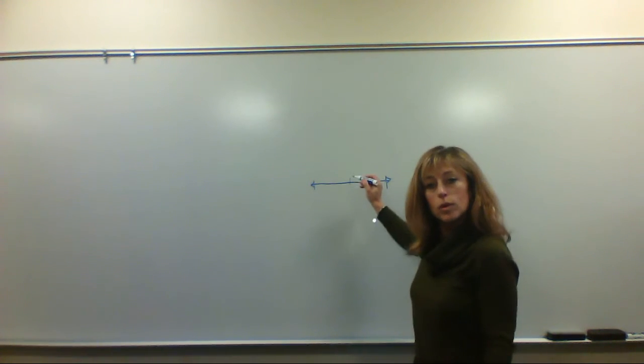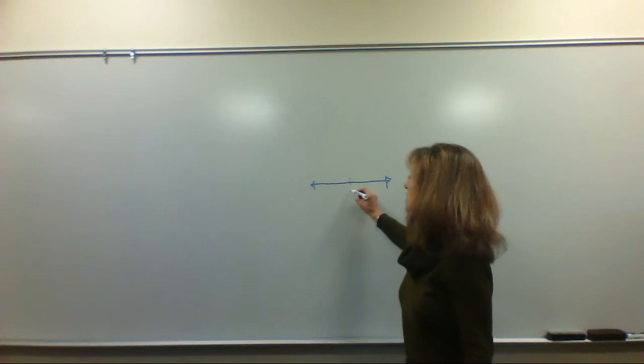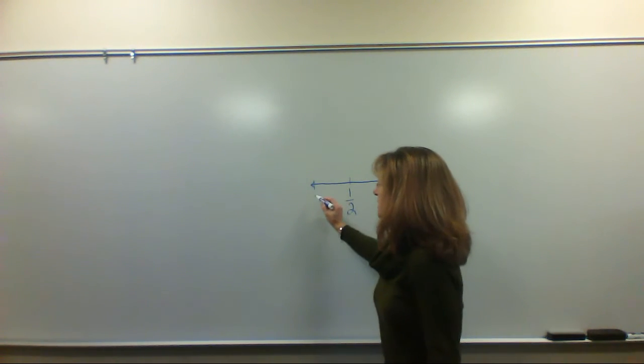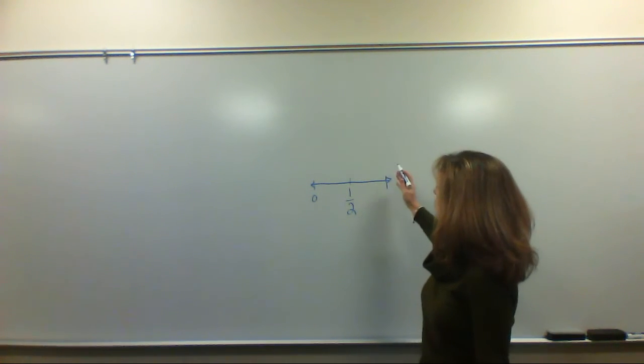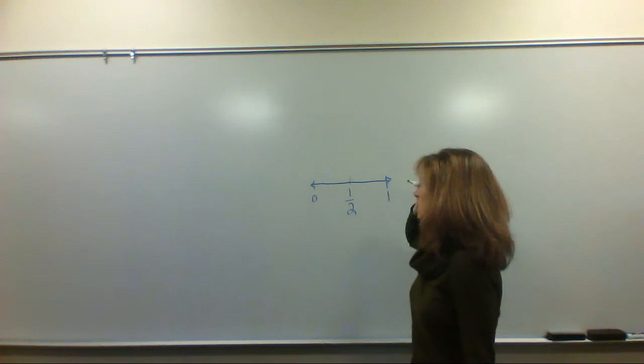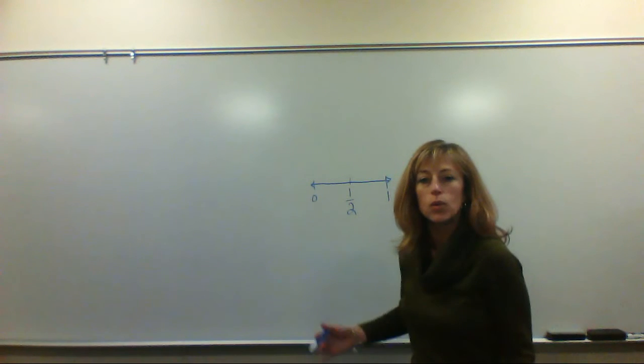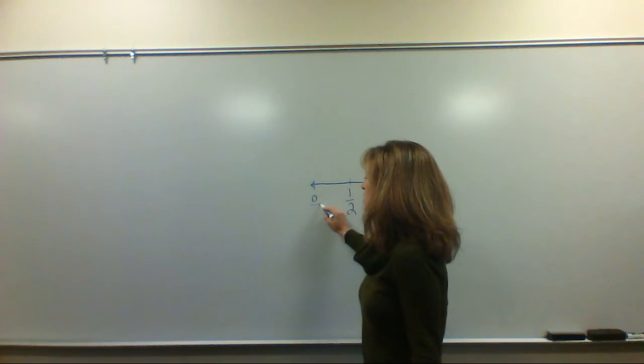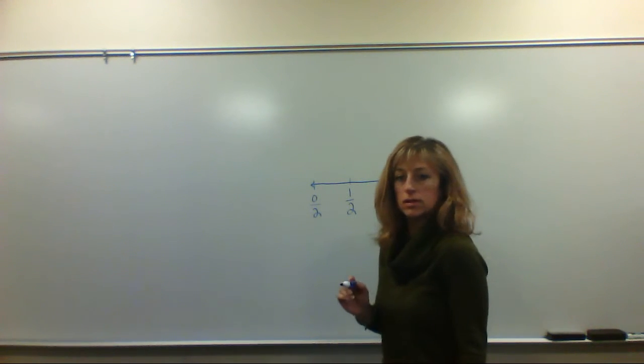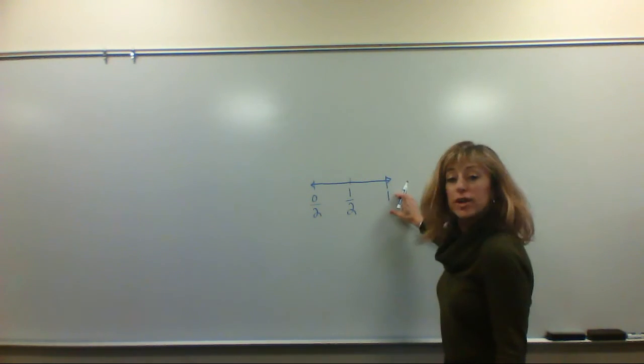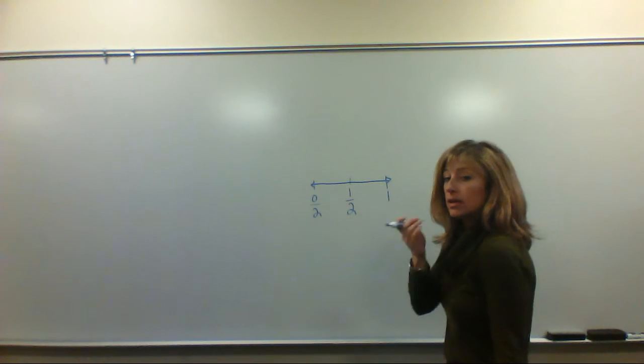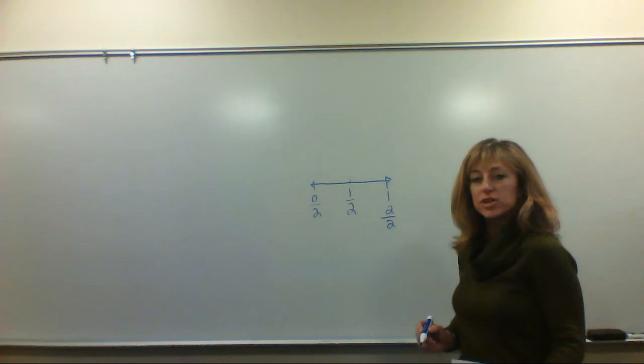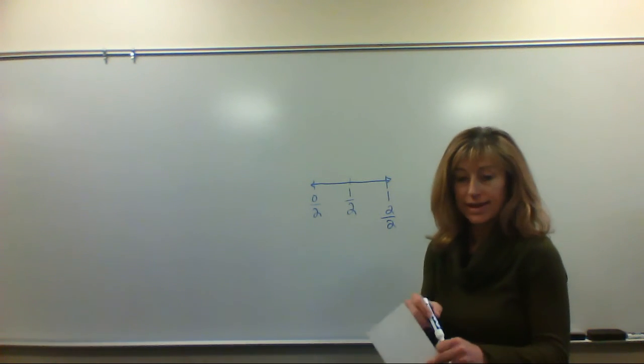Now at the middle what would we call the middle of this? That's right, one half. At this end it's zero. At the right end it's one. What's another name for zero in our number line? In this case it's zero halves. What's another name for one on this number line? One whole is two halves. So please make sure you have yours labeled like mine is.